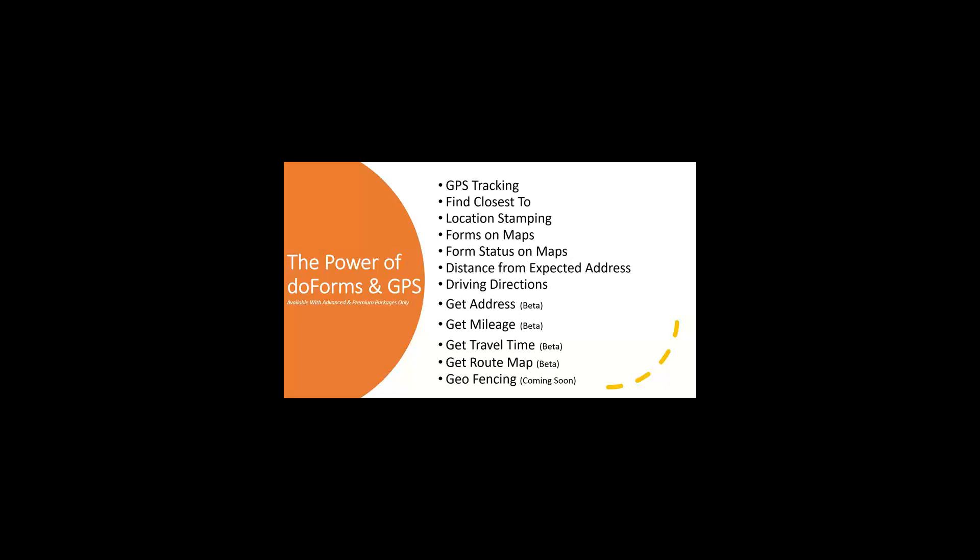Another feature is 'distance from expected address.' If you dispatch somebody to 10 Main Street and they hit an 'arrive' button in their form, the system compares the dispatched address against where they actually are when they clicked arrive, and calculates the feet or miles between those two points. You can then set a notification — for example, if the distance is greater than 1,000 feet, send an email alert that the arrival was not at the expected address.